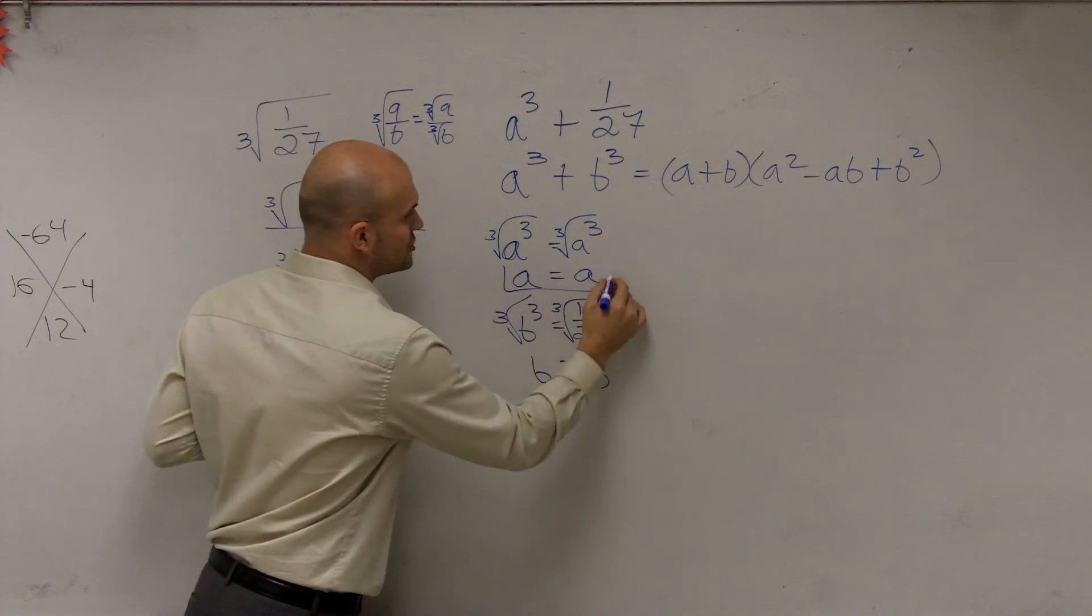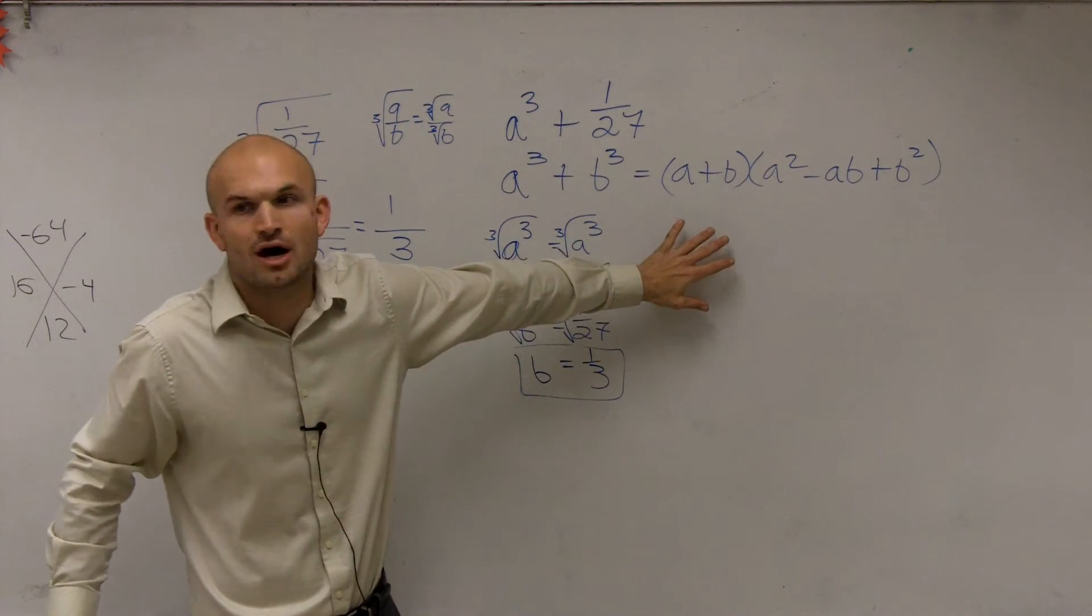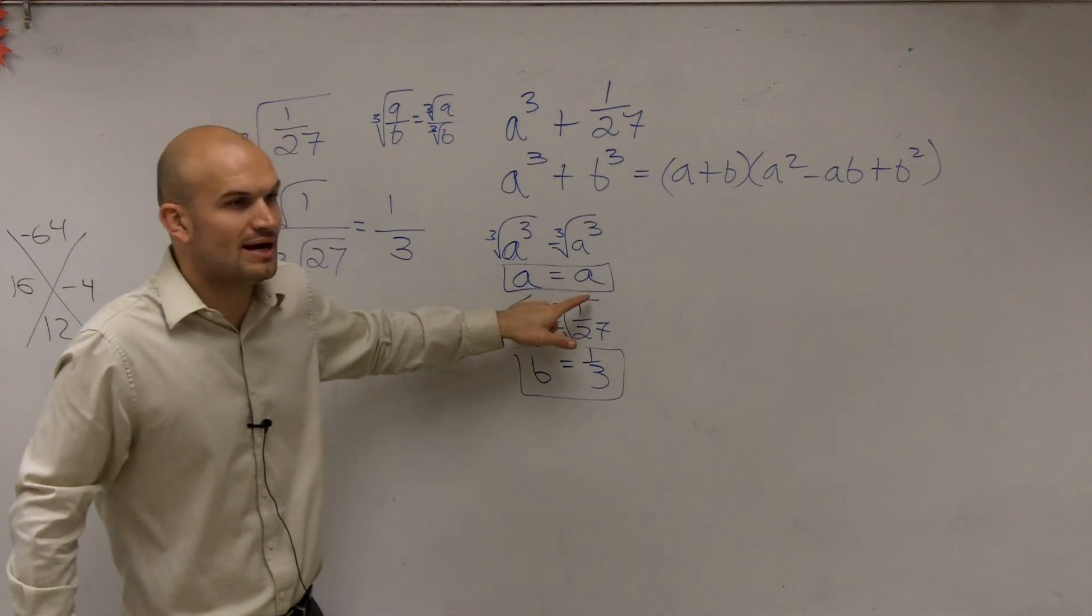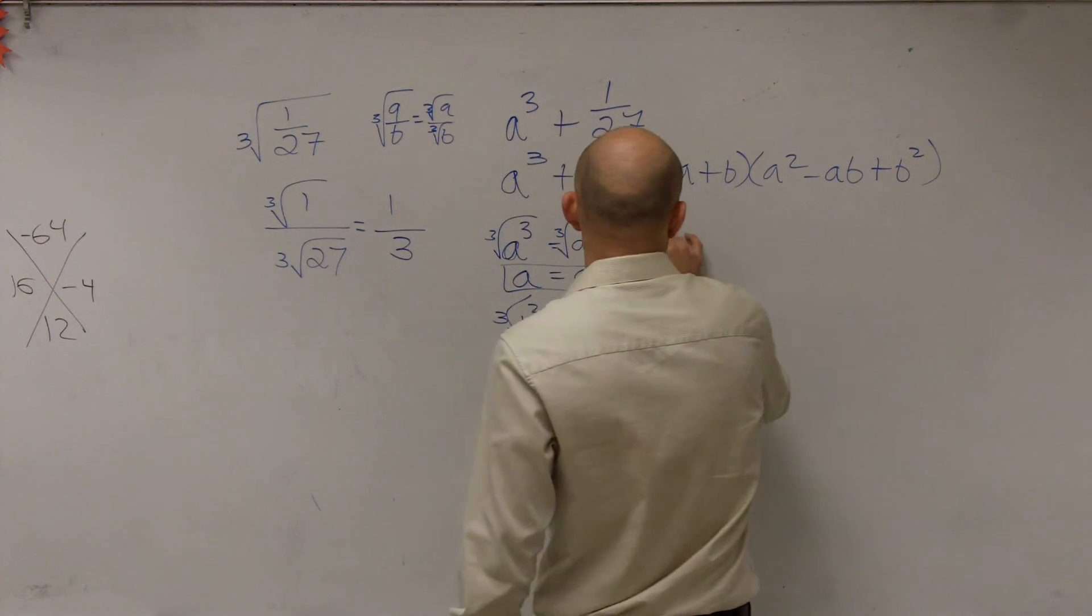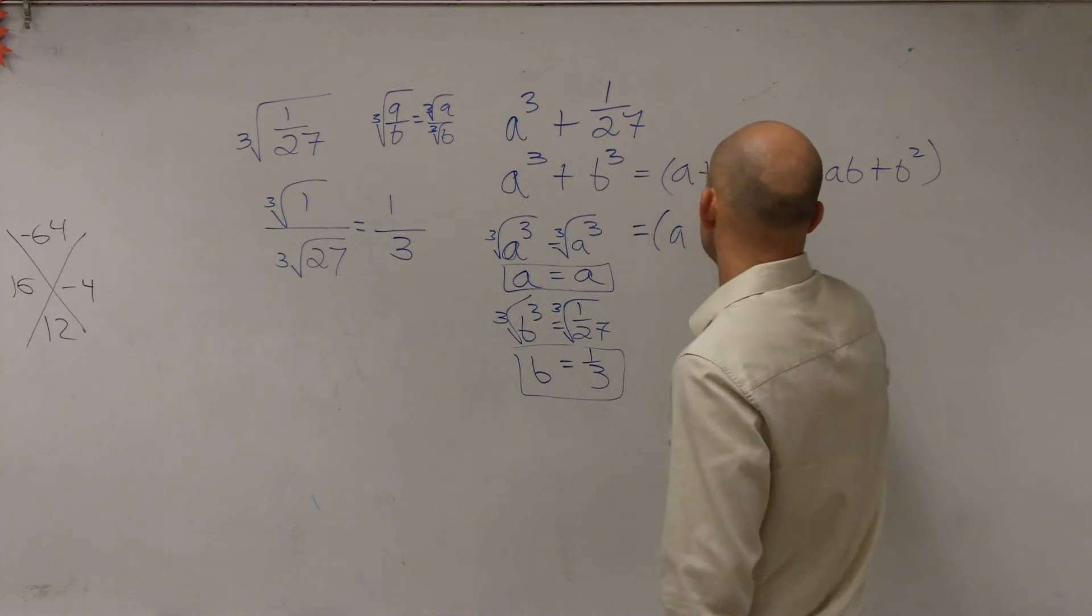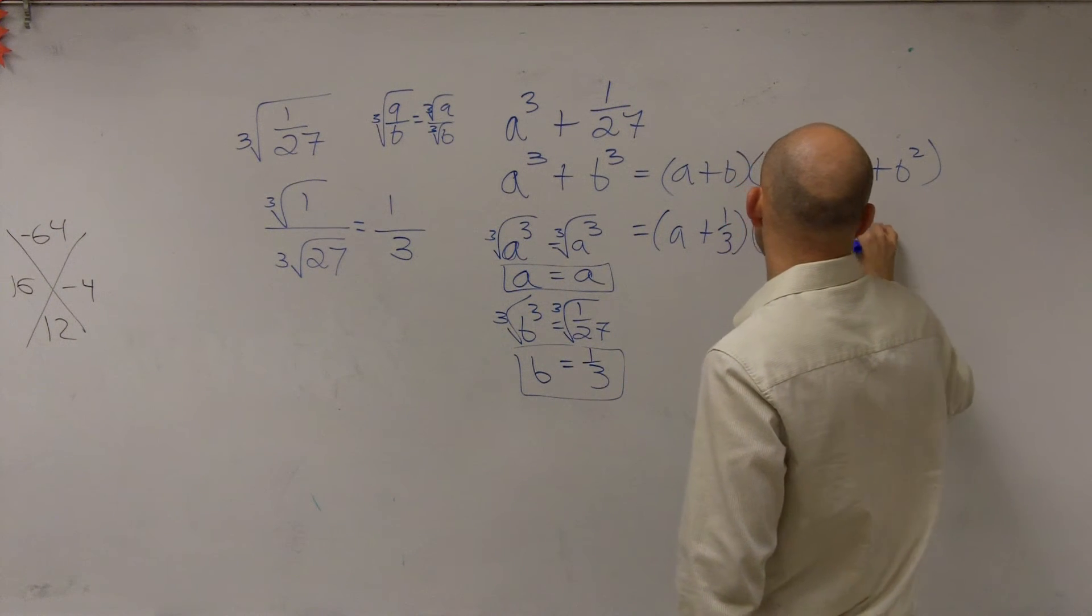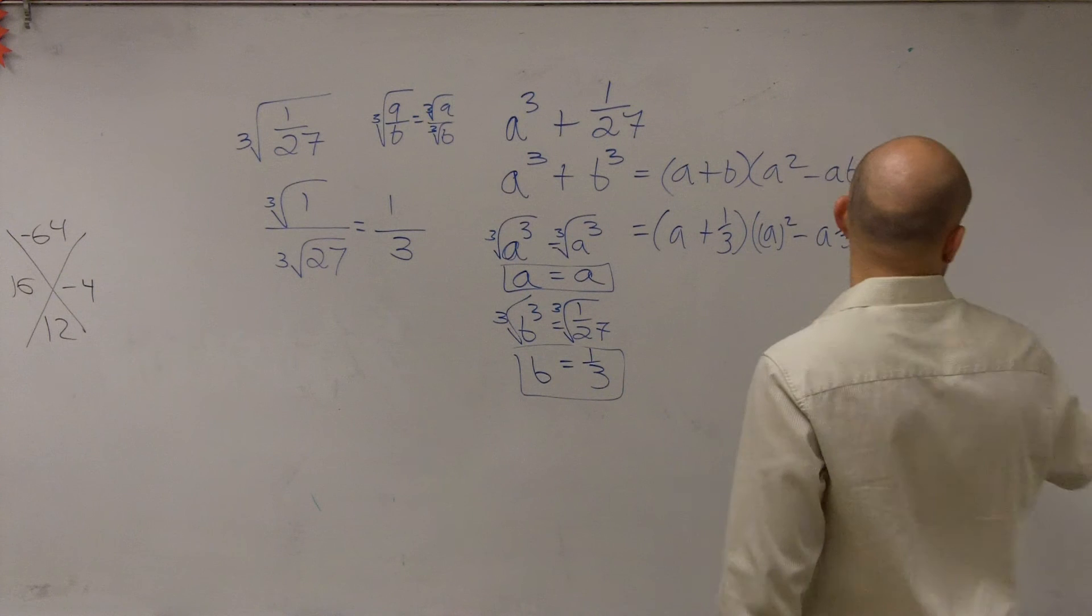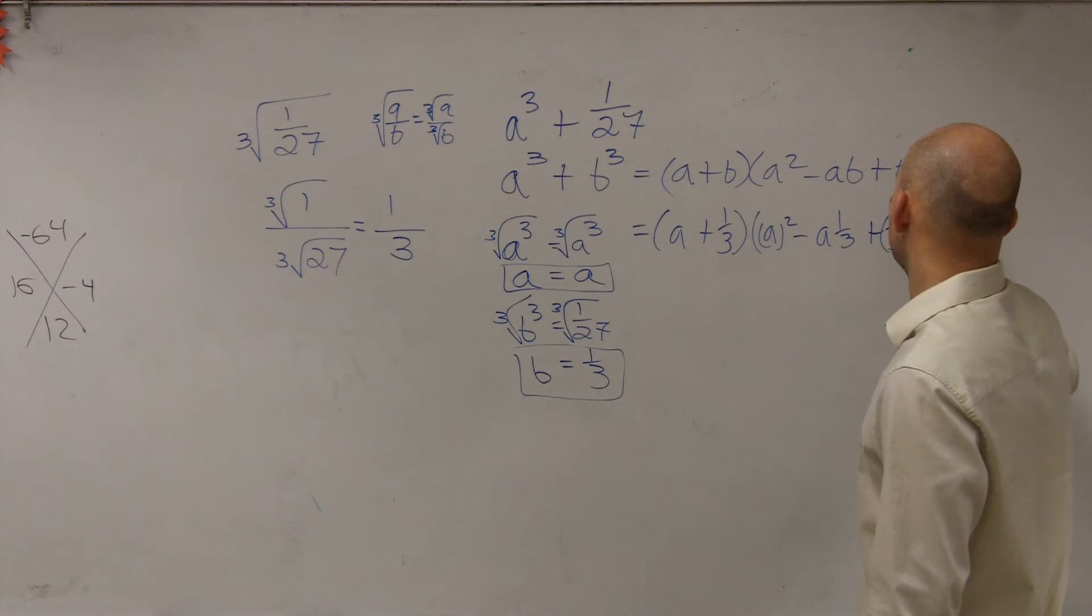Now I've told you what a equals and what b equals. Since we have the formula, we'll just plug in what a equals and what b equals. So my answer is going to be (a + 1/3) times (a² - a times 1/3 + (1/3)²).